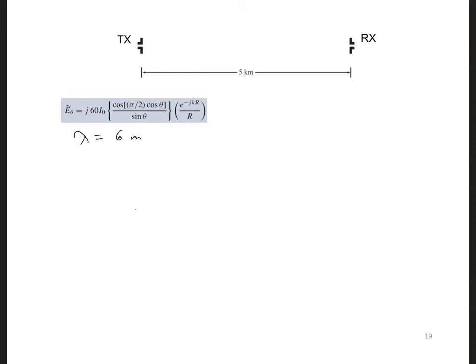And since we've given the far electric field expression for the transmitting dipole, we basically just need to solve the last part of the free transmission formula, which is the interception of the signal at the receiver and how much of that is actually received by the receiving antenna.